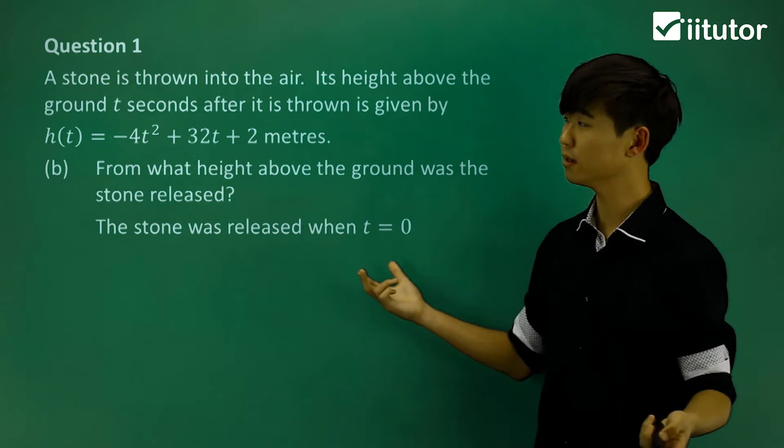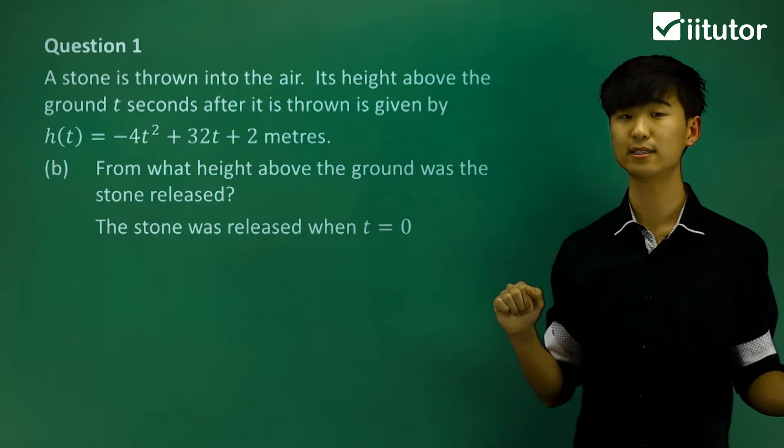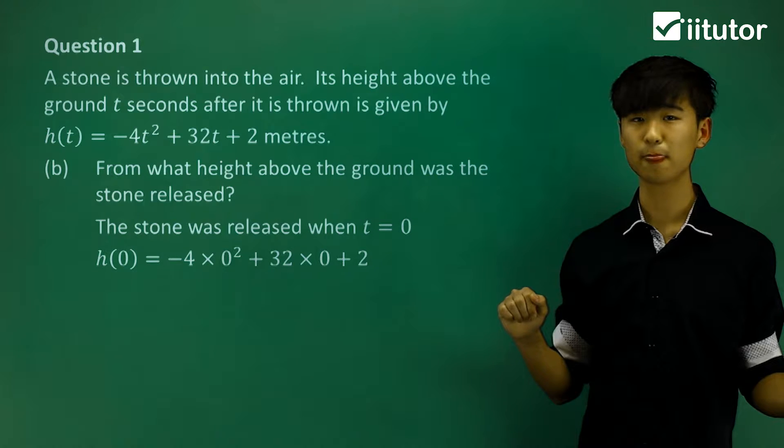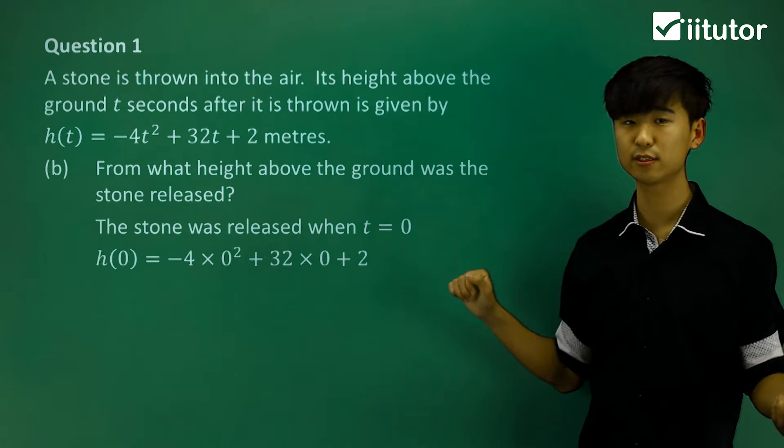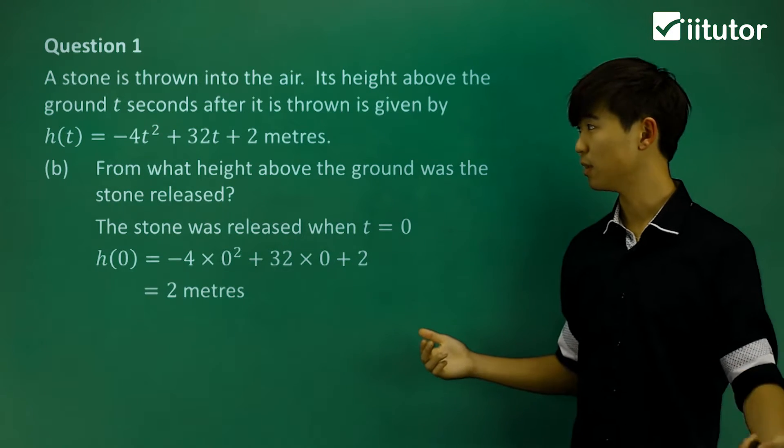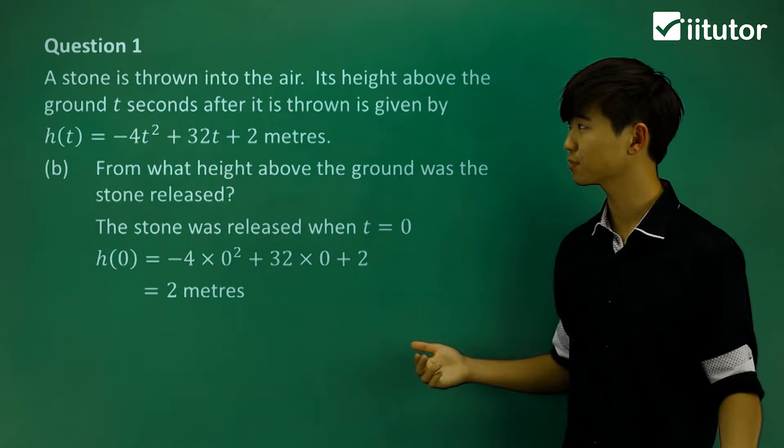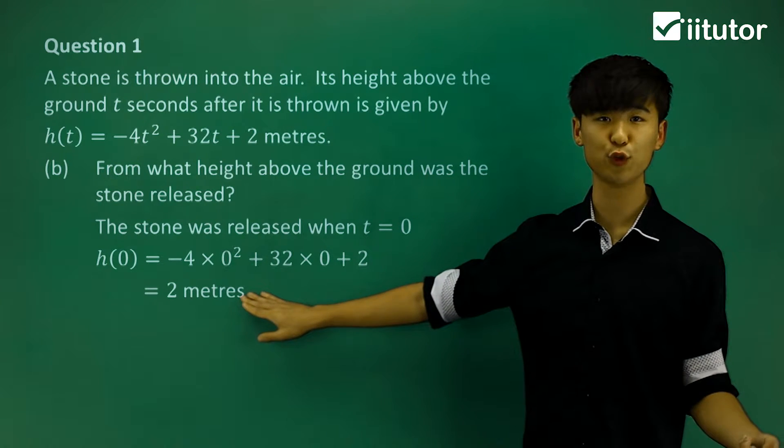When t = 0, we substitute it into the equation. If we simplify this, we get h = 2 meters. So when t = 0, the height is 2 meters.